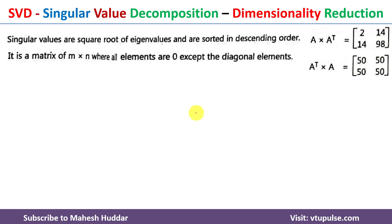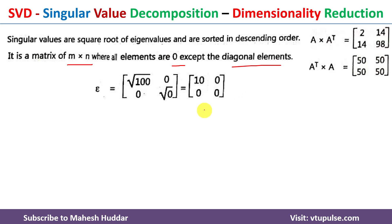The next step is to calculate Sigma. Sigma is always an m×n matrix with zeros everywhere except on the diagonal. The diagonal elements are the square roots of the eigenvalues, arranged largest to smallest. The first diagonal element is √100 = 10, and the second diagonal element is √0 = 0. All remaining elements are 0. This gives us Sigma.